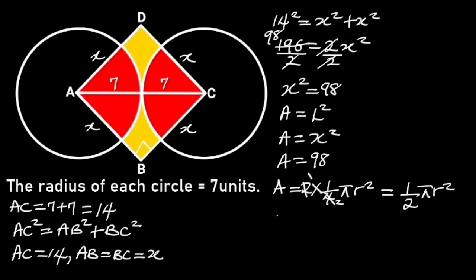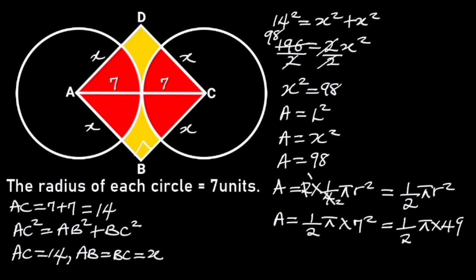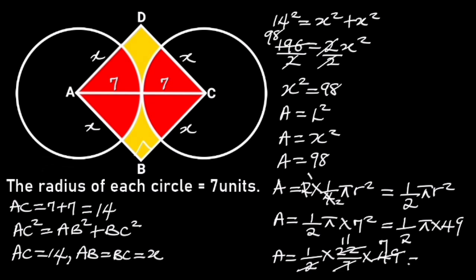Substituting 7, that is the radius of the 2 quarter circles in this formula, will give us area is equal to one half pi times 7 squared. 7 squared is 49, so the area is equal to one half times pi times 49. Taking pi to be equal to 22 over 7, it follows that the area will be equal to one half times 22 over 7 times 49. 49 divided by 7 is 7, and 22 divided by 2 is 11. We are left with 1 times 11 times 7, which is equal to 77 square units.